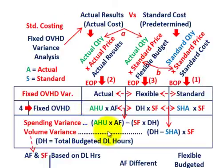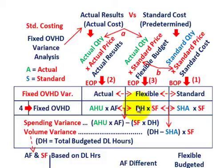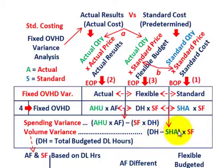For the volume variance, that's the difference between our flexible and standard amounts. The common factor both share is the standard fixed rate, so we can factor that out. The variance is just the difference between our denominator hours — total budgeted direct labor hours — versus the standard hours allowed, and that difference is multiplied by the standard fixed rate.